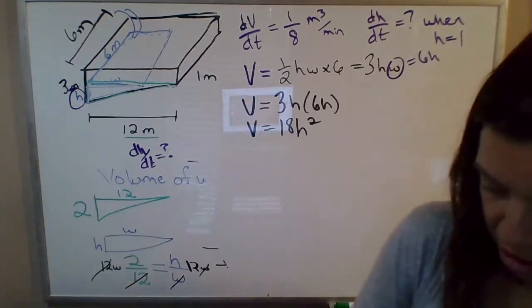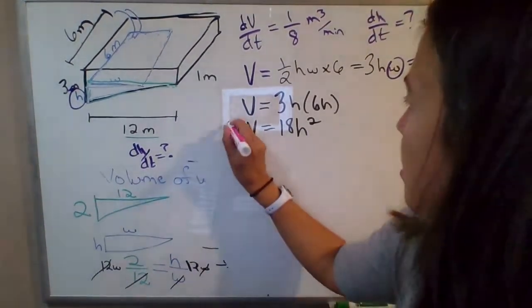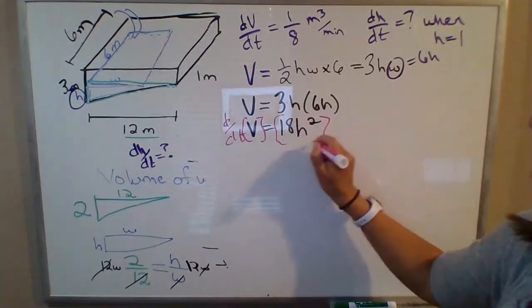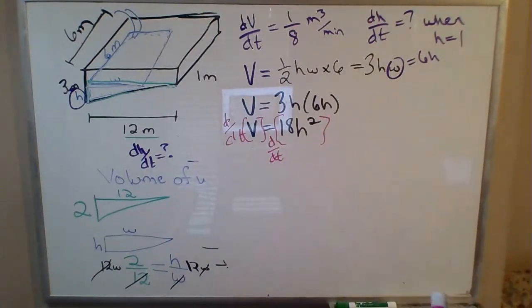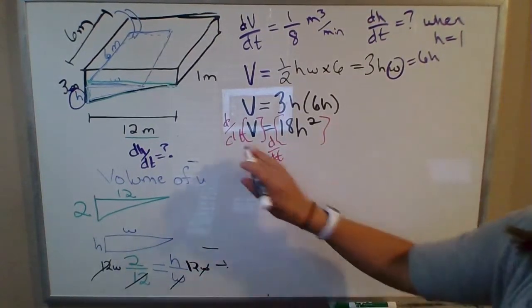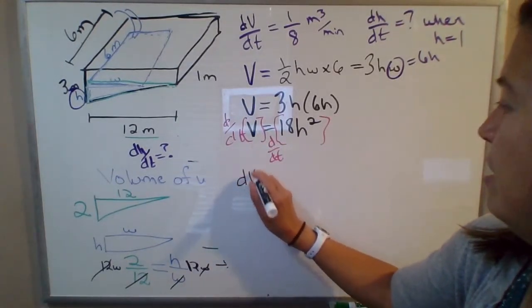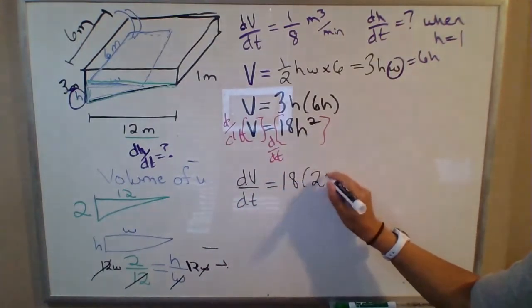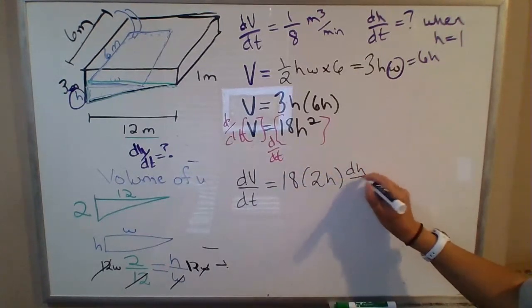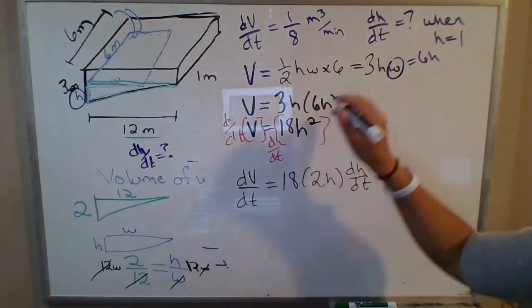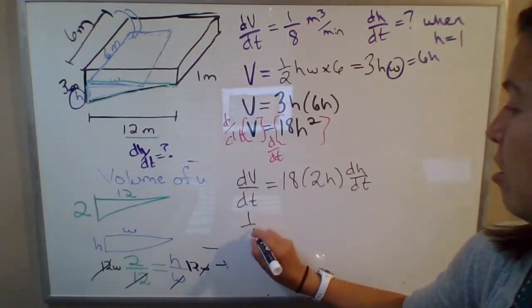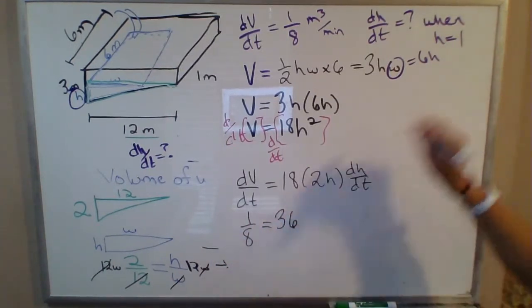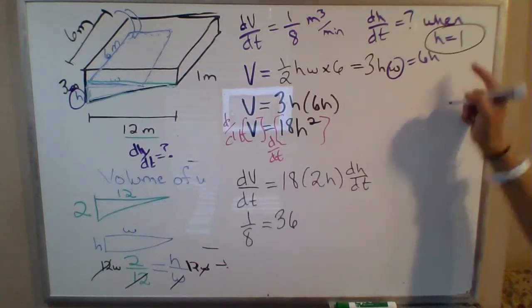So now we can differentiate both sides with respect to time t. So take d/dt here, d/dt of this side. So you have the derivative of volume. We just put dV/dt equals 18 times the derivative of h squared. So that's 2h times the derivative of the inside times the rate of change for h. Plug in what we know. So dV/dt is one-eighth of a cubic meter per minute. 18 times 2 is 36h. So now we can plug in. We've already taken the derivative at this point. So now we can plug in. We're looking at the instant that the depth of the water is one.